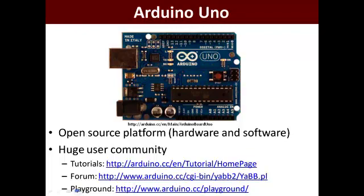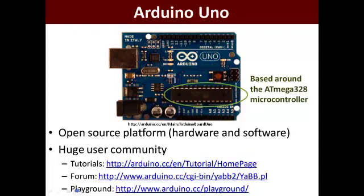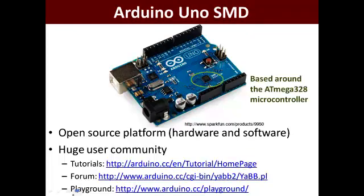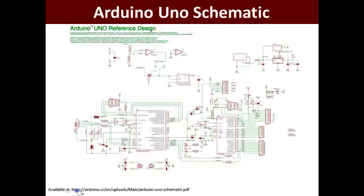This was the original Uno, some of which we have in lab. You can see it's based around the ATmega microcontroller — here's the big DIP version in a socket where you can pull out the microcontroller and put a new one in. The ones we've given you in class — which you get to keep — are actually the surface mount versions. This chip has the same functionality but is way smaller. It's $30 on SparkFun and a really great value. Part of it being open source is that both the schematics and the CAD files for the circuit board are available online.